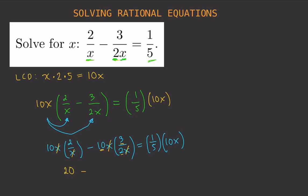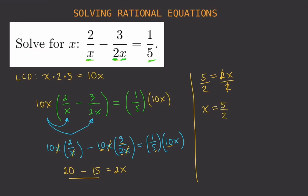On the right side, we divide 10 by 5 to get 2, so the right side is 2x. Simplifying the left side: 20 minus 15 equals 5. So we have 5 equals 2x. We isolate x by dividing both sides by 2, giving us x equals 5/2. This is the solution to our rational equation.